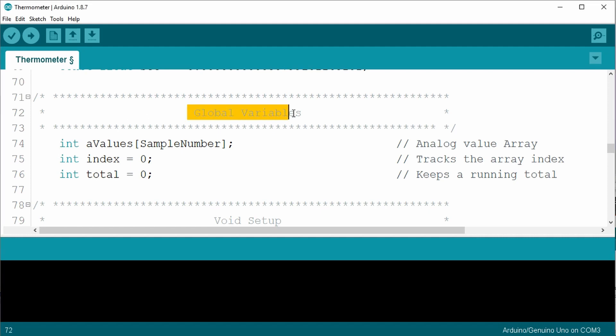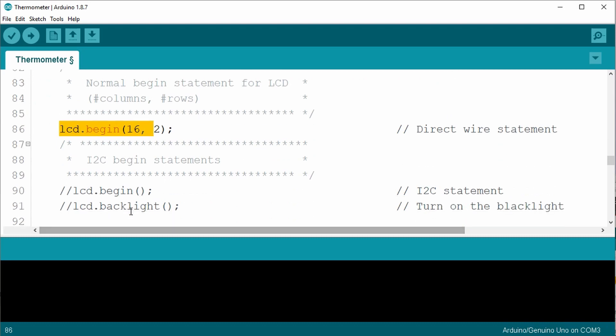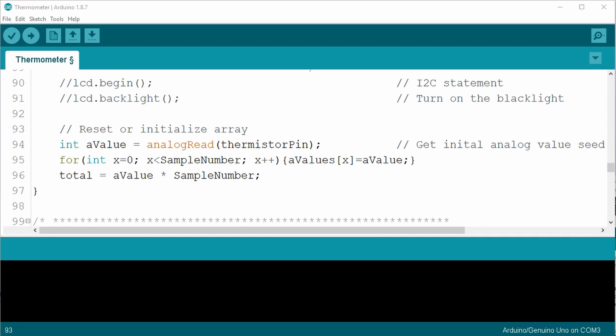Then I have these three global variables. An array value to store the analog samples, an integer index, and an integer total. The void setup starts the LCD. Again, you can change this by commenting or uncommenting some of the lines if you're using the I2C module. Then the array values are initialized by first getting an analog value of the thermistor pin. A for loop sets all the array values to this initial value and the total is set to the initial value multiplied by the sample number. What I'm doing here is creating the initial sample weight and as additional samples are read, the old value is deleted and the overall value slowly changes to the new value. This keeps the measured temperature from being erratic and has a smoothing effect on the readings. I'll talk about more of this later.